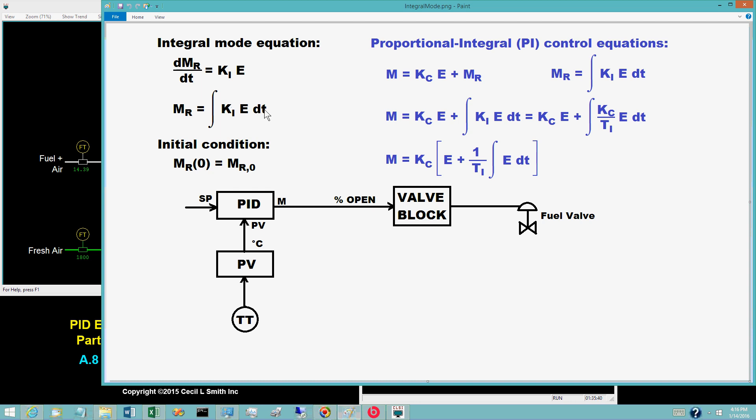For either equation, an initial condition is required. The initial value for the controller output bias is the value M sub R0, computed from the bumpless transfer calculations.